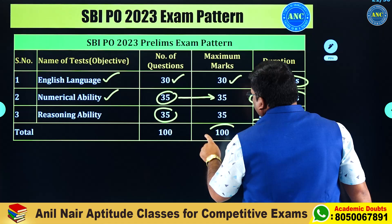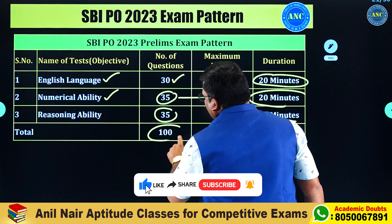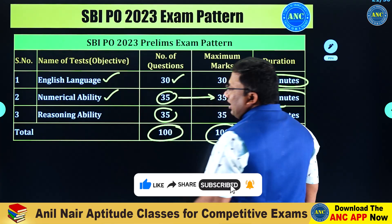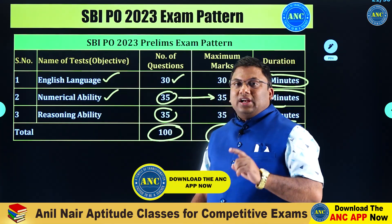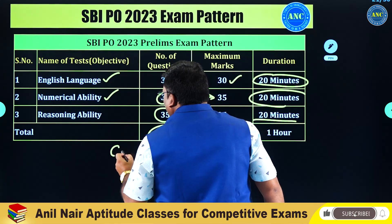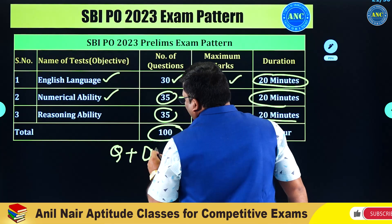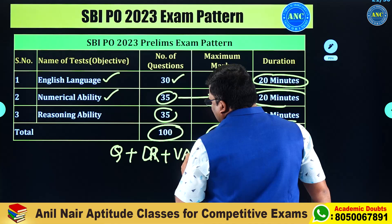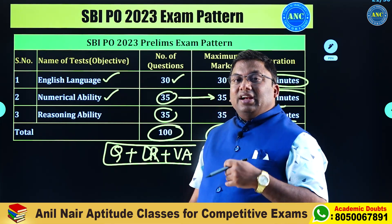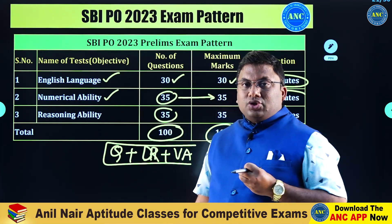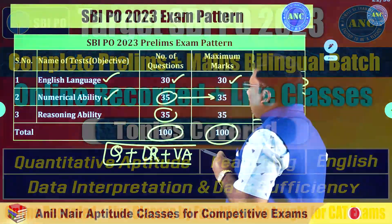In total, the SBI PO prelims examination is 100 marks and 100 questions. There is 35% weightage to reasoning ability, 35% to quantitative ability, and 30% to English language. That means you need to prepare for three sections: Quant, Reasoning Ability (LR), and Verbal Ability. We will discuss in detail what topics come in each section.